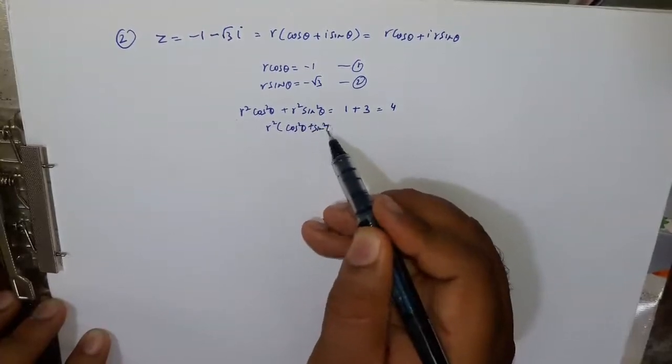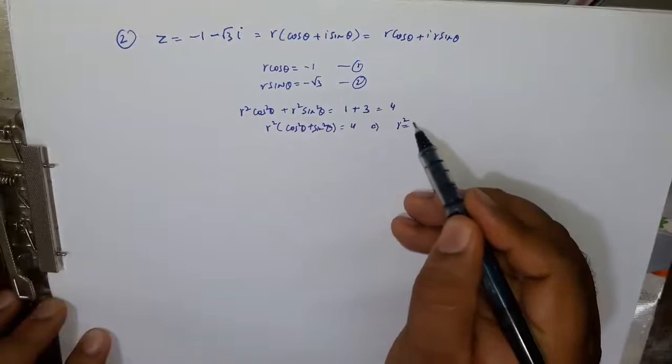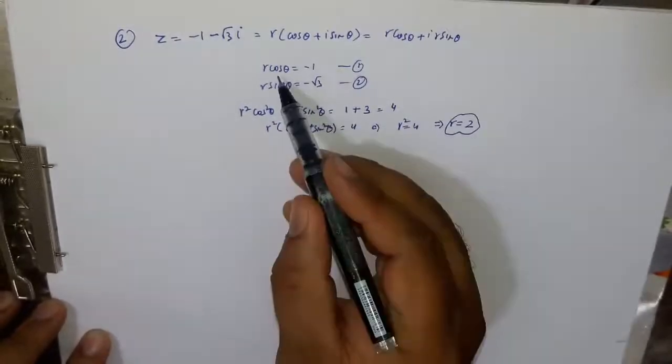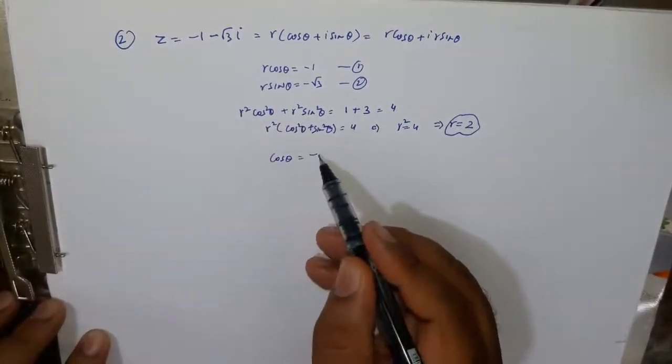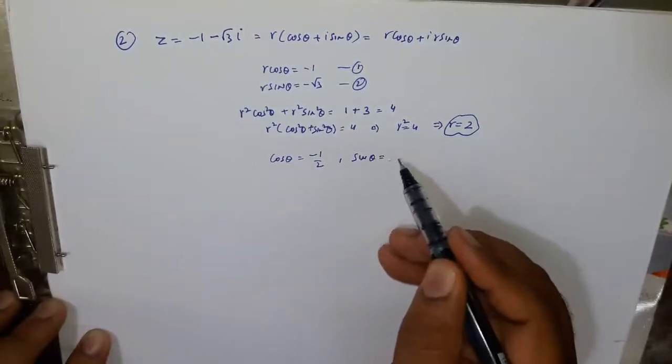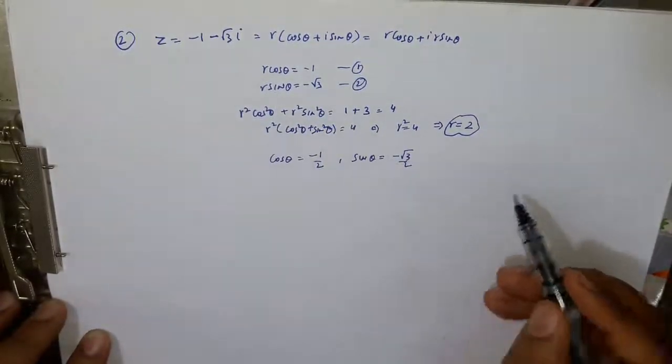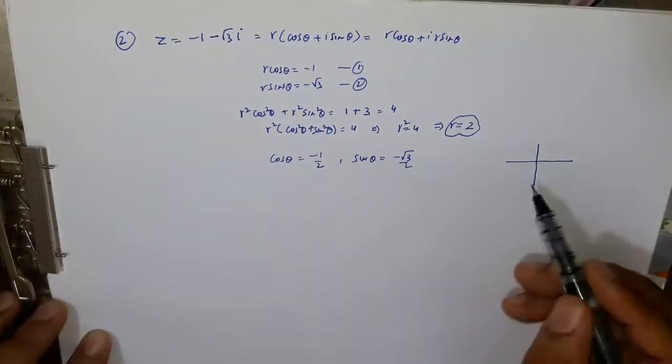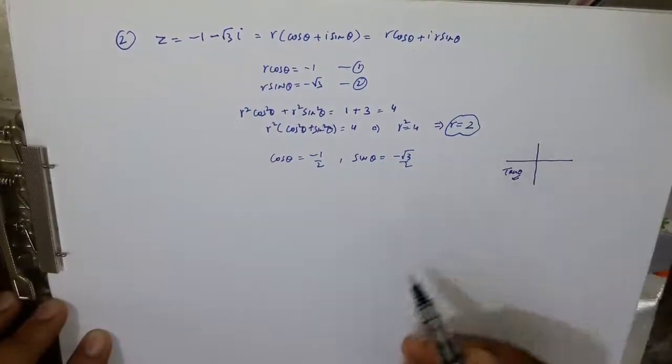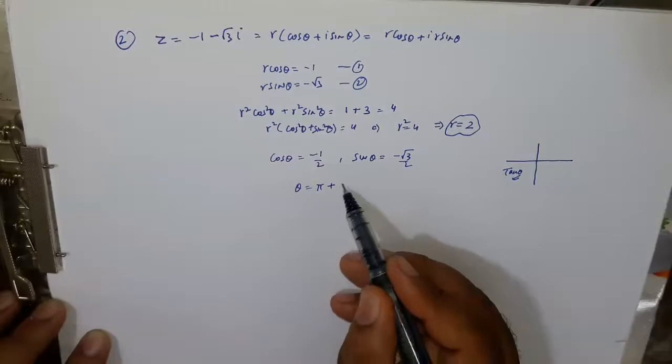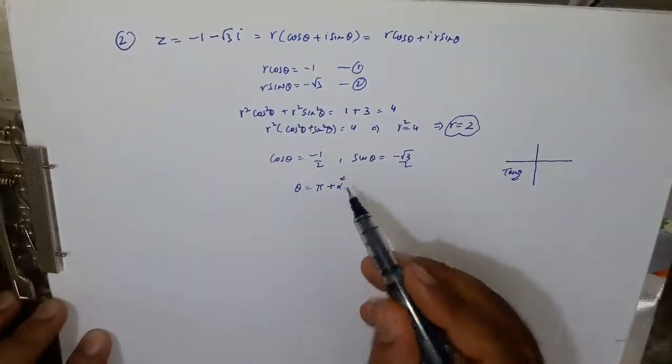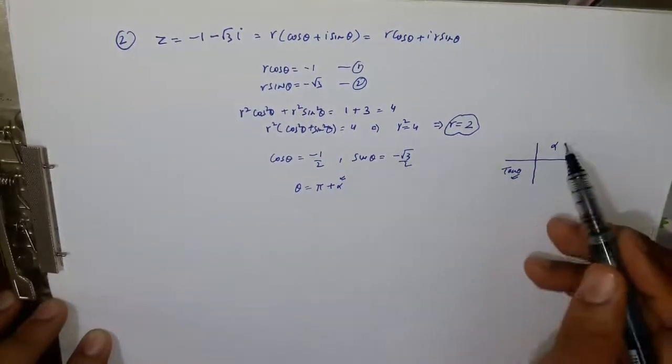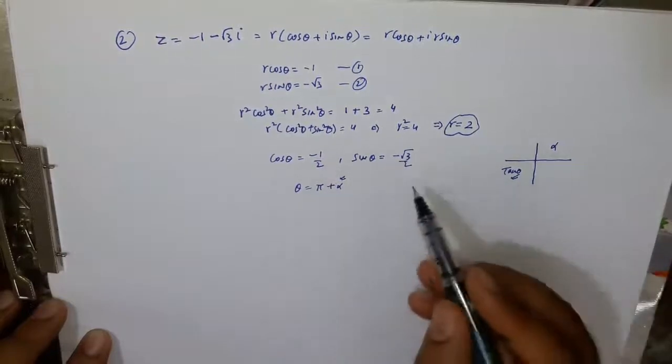Let this be equation 1 and this be 2. On squaring and adding both the equations we have r square cos square theta plus r square sin square theta equal to minus 1 square se 1 or minus root 3 square se 3, so it se 4 aayega. R square cos square theta plus sin square bracket ke andar 1 ho jayega to r square agar aapka 4 aayega to r plus minus 2 aayega but distance cannot be negative to r 2 aayega. If we put this value here to 2 cos theta minus 1 to cos theta aayega minus 1 by 2 or sin theta aayega minus root 3 by 2.